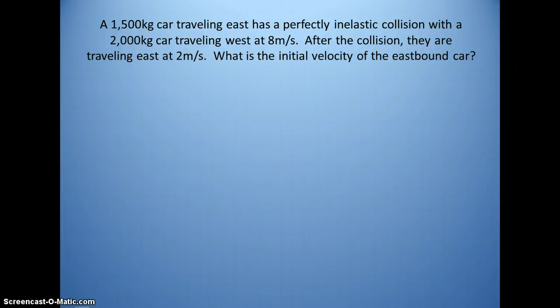Again, I would strongly recommend drawing a picture of the initial conditions. We don't know the initial velocity of object A. I'm labeling the positive direction to remind me that since the other one is going west, it will have a negative velocity. After the collision, since it's a perfectly inelastic collision and they are stuck together, they are traveling east at 2 meters per second.